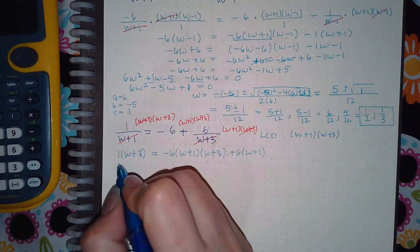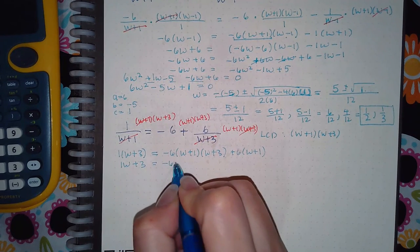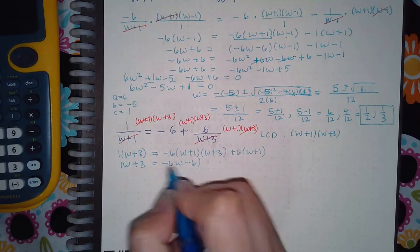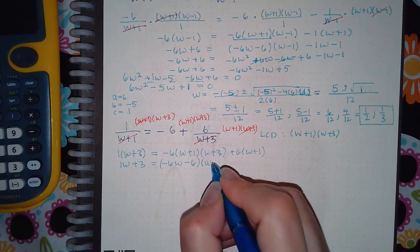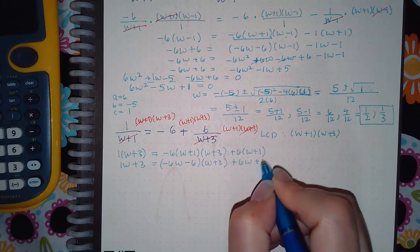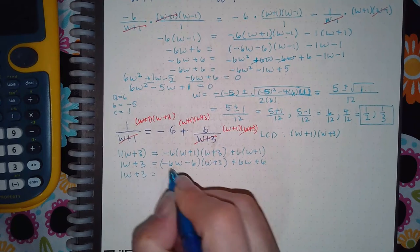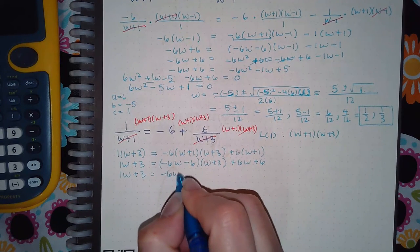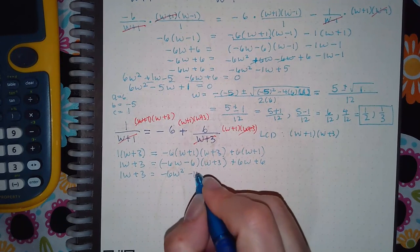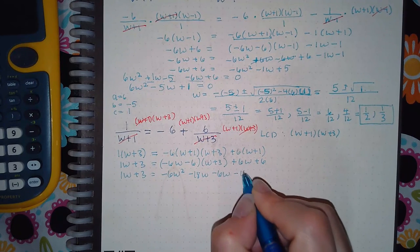So 1w plus 3, negative 6w minus 6, which still has to be multiplied by the w plus 3, plus 6w plus 6. So then we'll go ahead and multiply this out. And we get negative 6w squared, negative 18w, negative 6w, and negative 18.